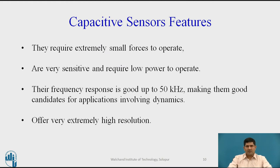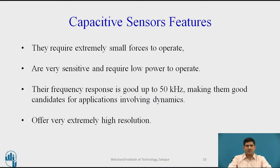What are the features of capacitive sensors compared to other sensors? They require extremely small forces to operate, are very sensitive, and require very low power. Frequency response is quite good, up to 50 kHz, making them very good candidates for dynamic measurement applications such as accelerometers. They offer extremely high resolution — more than potentiometric sensors, and sometimes matching or exceeding LVDT sensors.